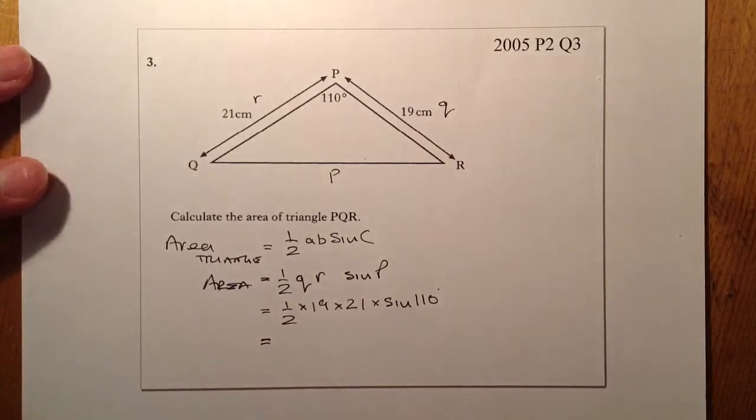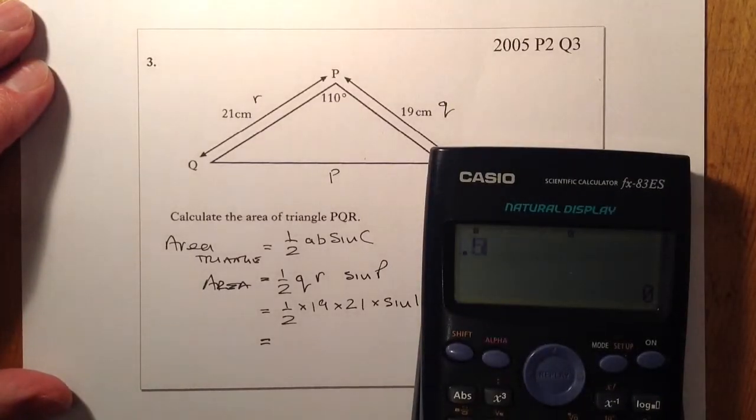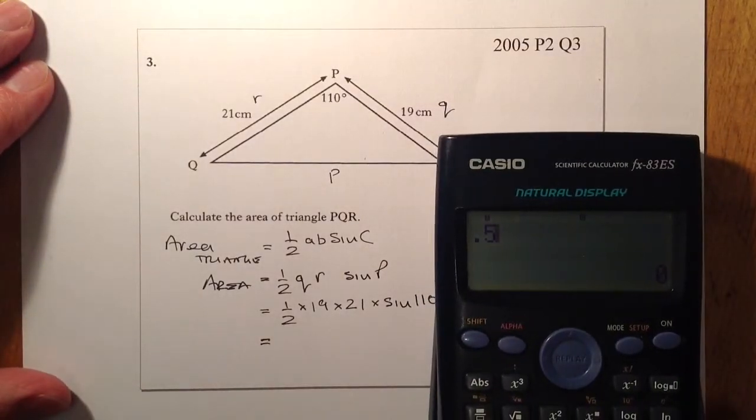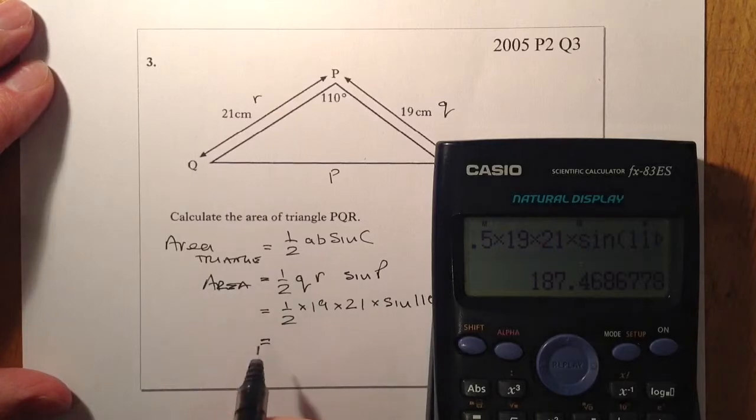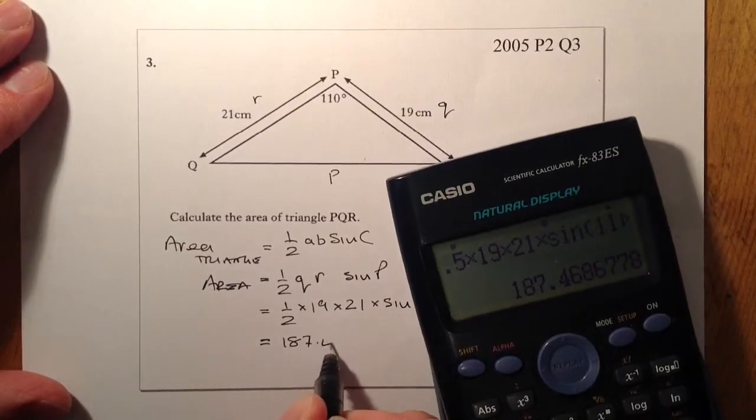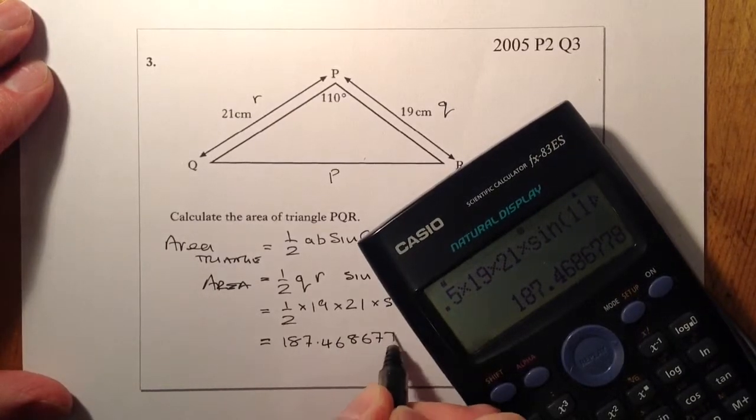When I put that in the calculator, let's see what we get. So I'm just going to go with 0.5, or 1 divided by 2 if that's what you put into your calculator. I'll multiply that by 19, multiply by 21, and multiply by sine of 110. And make sure your calculator's in degrees and not in radians, especially if you're borrowing a calculator, and press the equals button. So from there I've got 187.4686778.